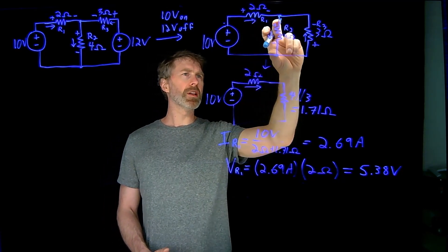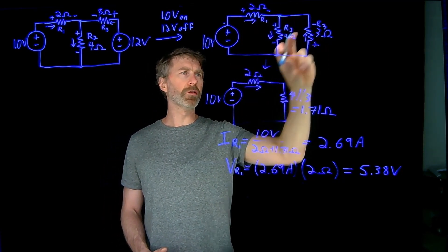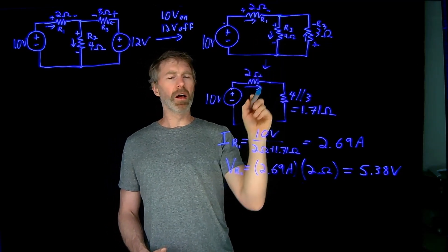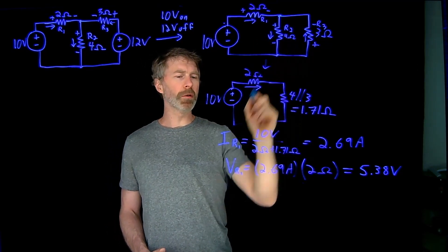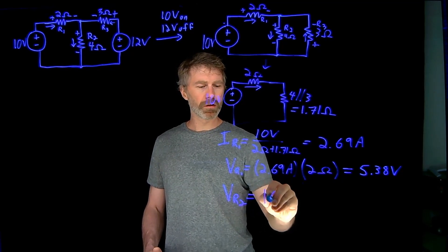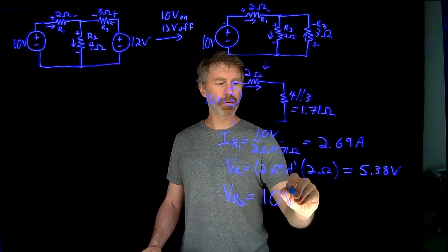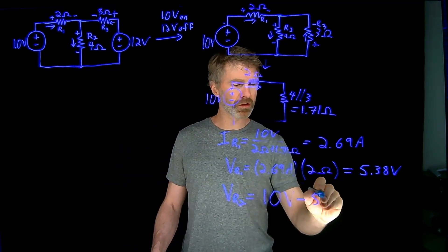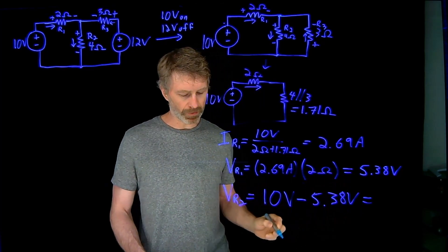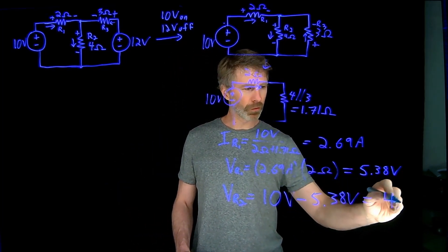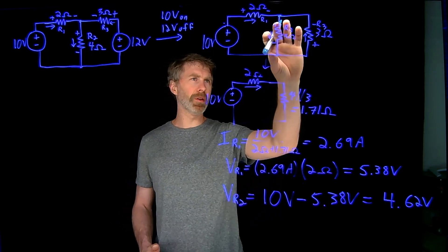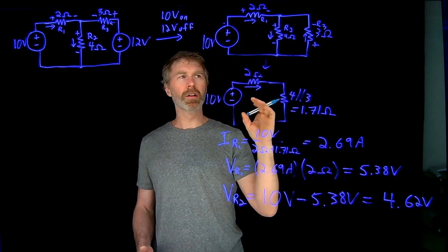Whatever is left over is the voltage across R2 and R3. Note how I've defined the voltage polarities: R2 is positive on one side and negative on the other; R3 is defined in the opposite orientation. Using Kirchhoff's Voltage Law, VR2 equals 10 volts minus the 5.38-volt drop across the 2-ohm resistor, which works out to 4.62 volts.